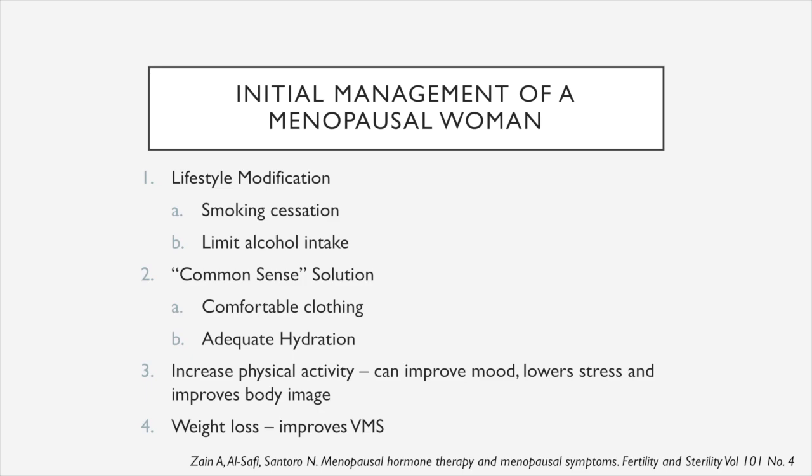For the initial management of a menopausal woman, we recommend lifestyle modification first. We recommend smoking cessation and limiting alcohol intake. Common sense solutions include advising patients to wear comfortable clothing and drink lots of water. We also recommend exercise, because this can improve mood, lower stress, and improve body image. Finally, we also recommend losing weight, because this improves vasomotor symptoms.